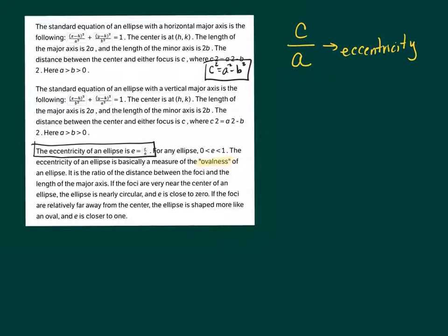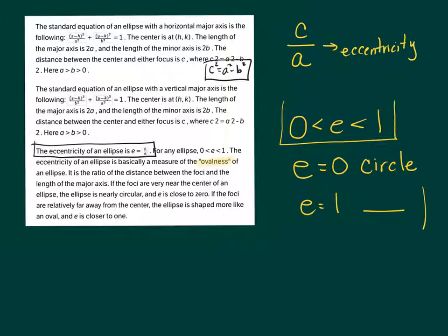Eccentricity is the ovalness or the squishiness of the oval. For any ellipse, the eccentricity is going to be between zero and one. If the eccentricity reaches the number zero, that is when you have a beautiful perfect circle. If the eccentricity is to reach one, then you no longer have an ellipse. You just have an ellipse that has been smooshed down so that it's a line.